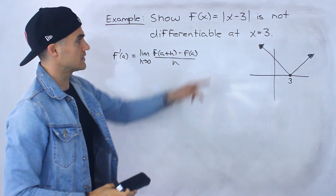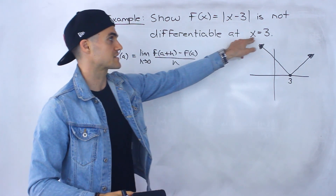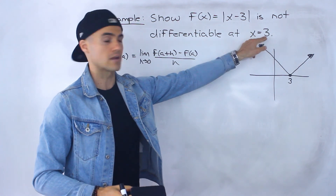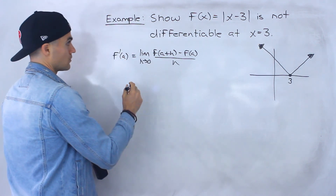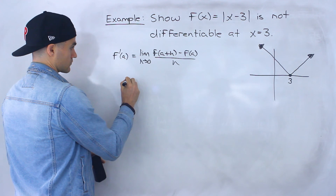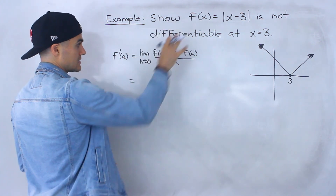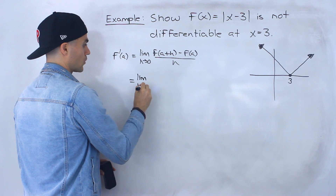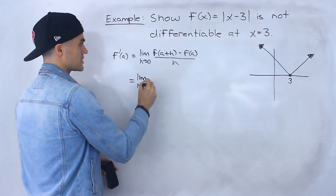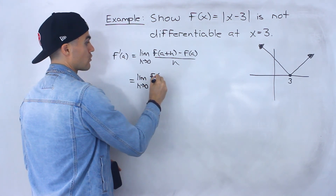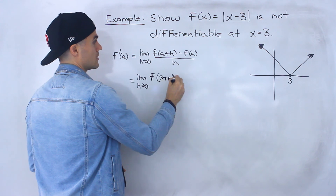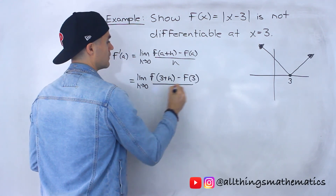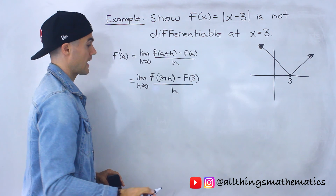The function we're dealing with is absolute value of x minus 3, and the a value is 3. So plugging these parameters in, we're going to be working with the limit as h approaches 0 of f of 3 plus h minus f of 3, all over h.